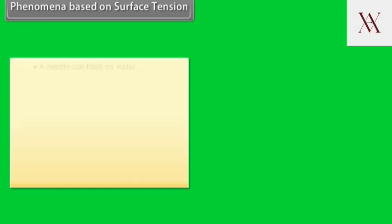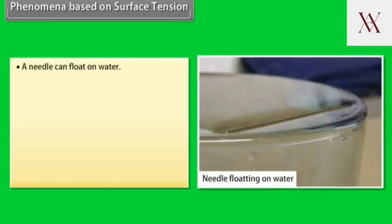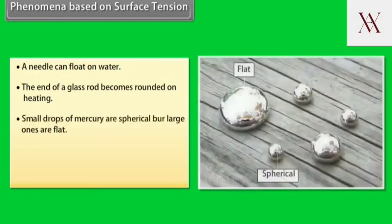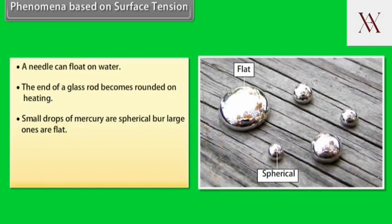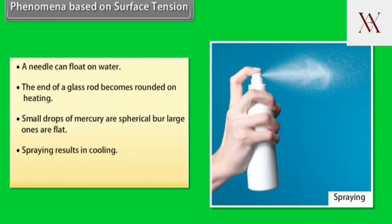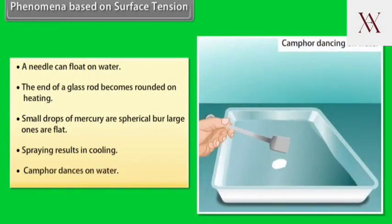Phenomena based on surface tension. A needle can float on water. The end of a glass rod becomes rounded on heating. Small drops of mercury are spherical but large ones are flat. Spraying results in cooling. Camphor dances on water.